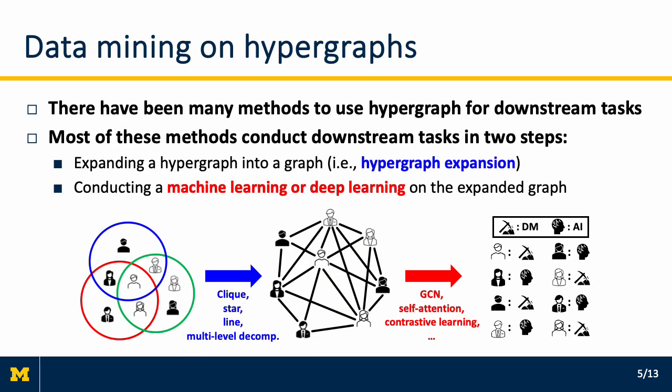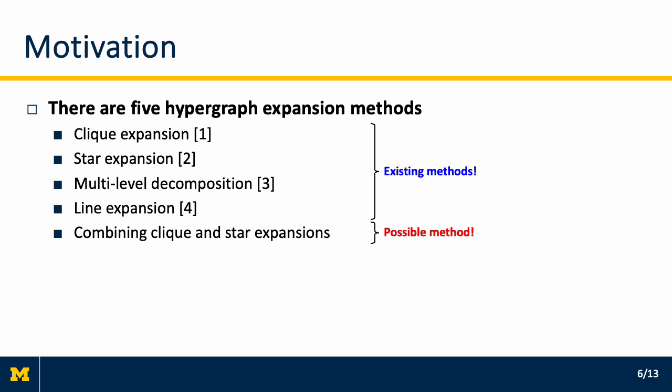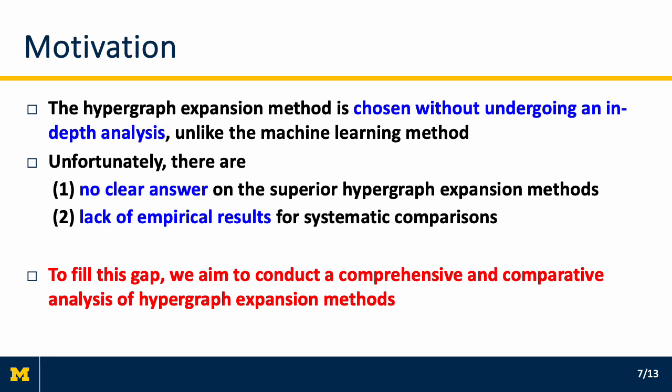Due to the expressive power of hypergraphs, there have been many methods to use hypergraphs for downstream tasks. Most of these methods conduct downstream tasks in two common steps: one, expanding a hypergraph into a graph, which is referred to as hypergraph expansion, and two, conducting machine learning or deep learning on the expanded graph. This is our motivation.